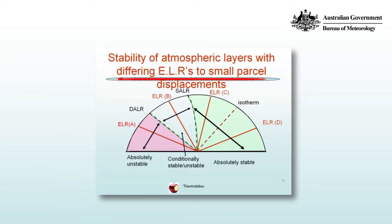Environmental lapse rate B is between the DALR and the SALR. If you lift a dry parcel, it will cool more rapidly than the environment, and since the parcel will always be cooler, it will be stable. But if the air is saturated, then as you lift it, it will be warmer than the environment. So the stability of environmental lapse rate B is conditional on whether or not the parcel of air is saturated or unsaturated.